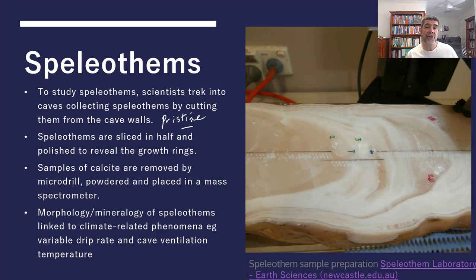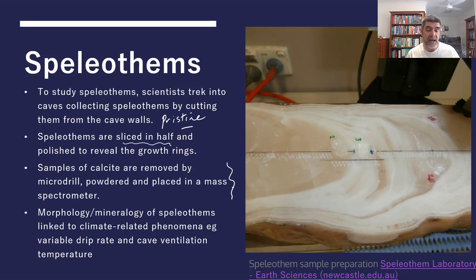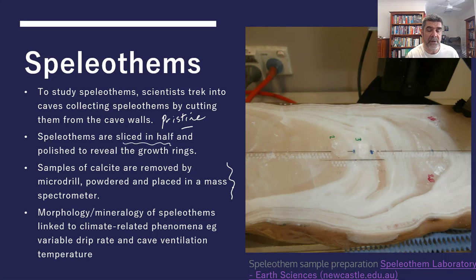Speleothems are sliced in half and polished to reveal growth rings. A prepared sample on the Newcastle University Earth Science page shows growth rings clearly, along with tiny holes made by micro drills used to collect small calcite samples. Limestone consists primarily of calcite — calcium carbonate — giving us carbon and oxygen as potential isotopes for analysis, including delta 18O values.